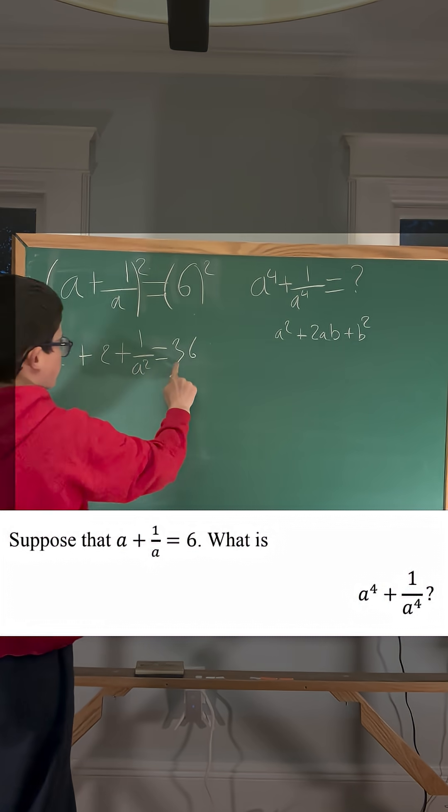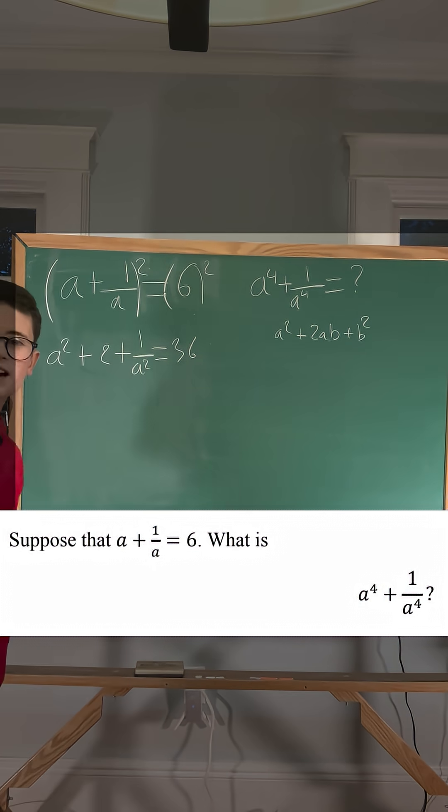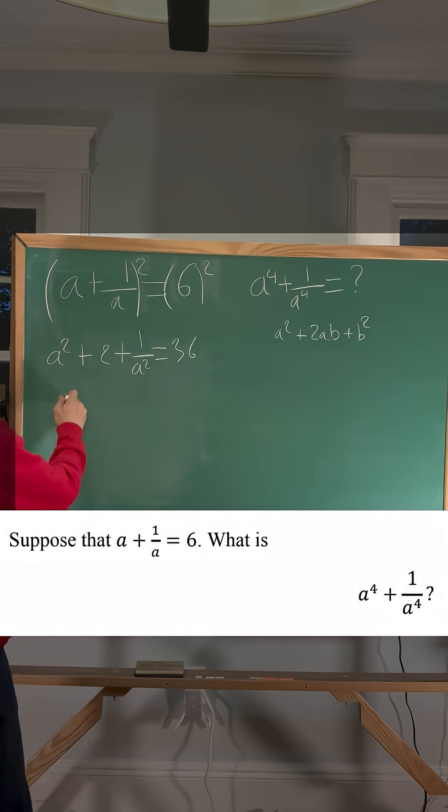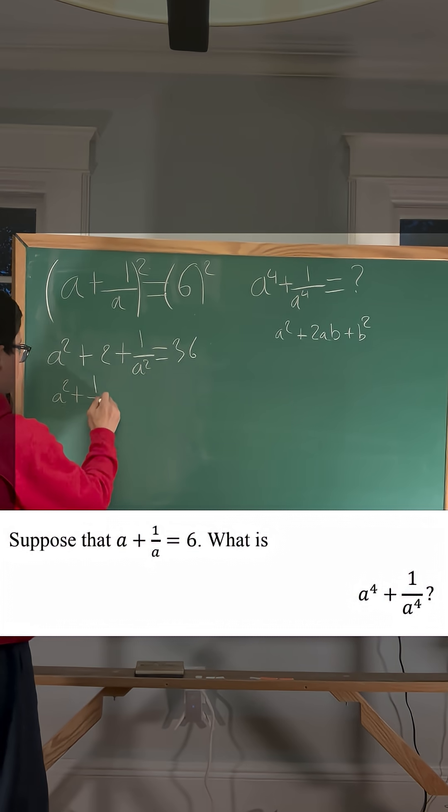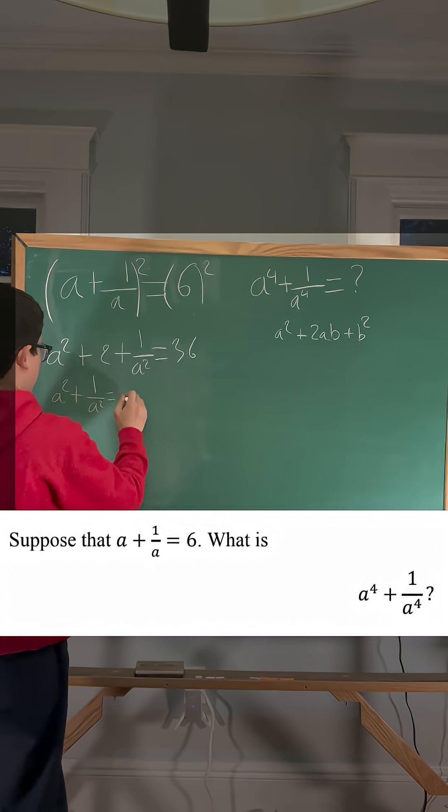I'm going to transfer this 2 over to this side of the equation because I want to isolate the variables. So it would result in having a squared plus 1 over a squared equals 34.